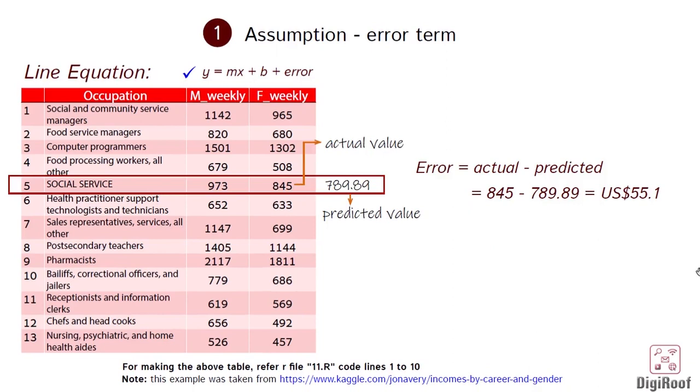As you can see, there is a compromise involved in making such predictions. For example, as per our sample data of 30 industries, for the social service occupation, the actual value of response is US$845 and the value of the predictor, that is male weekly salary, is US$973.